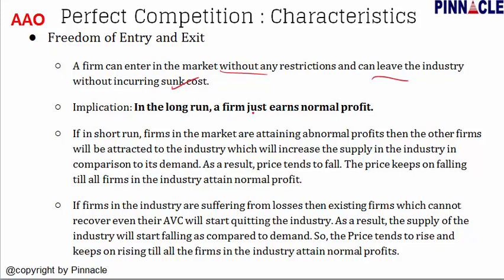In the short run, a firm earns a normal profit. Normal profit is the minimum profit required for an entrepreneur to remain in the industry. If firms are making abnormal profit — that is, profit over and above normal profit — then other firms will be attracted to the industry, which will increase the supply in the industry compared to demand. As a result, prices tend to fall, and the price keeps falling until all firms in the industry attain normal profit.